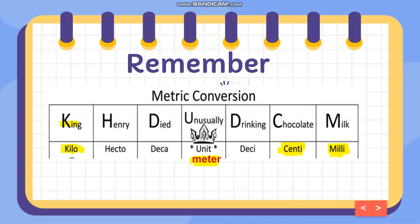I will show you this table where you can easily understand the relationship between the different units of length. We have kilometer, meter, centimeter, and millimeter — focus on these four. To understand metric conversion, you need to memorize this mnemonic: 'King Henry Died Usually Drinking Chocolate Milk.' King Henry died and usually drinking chocolate milk.